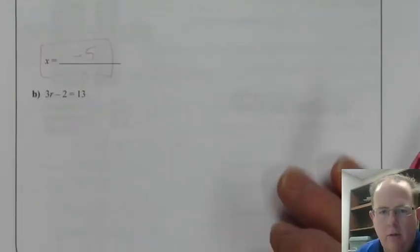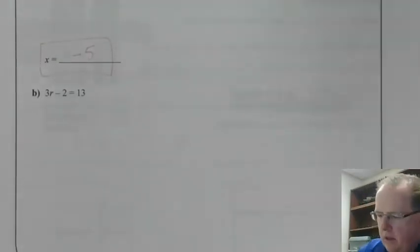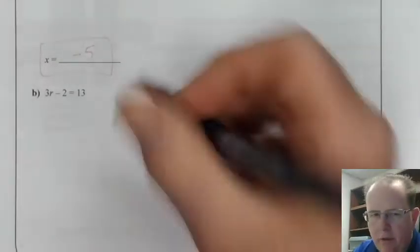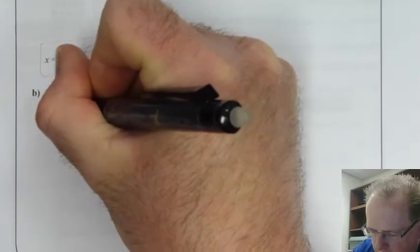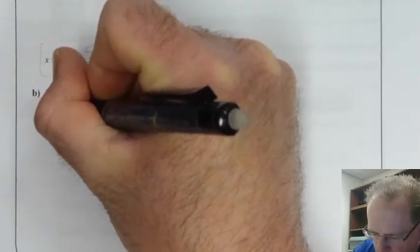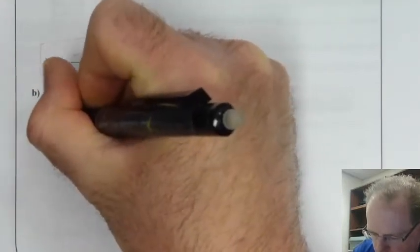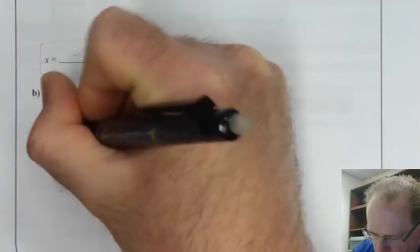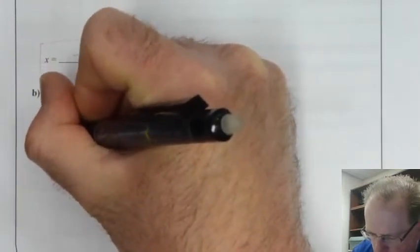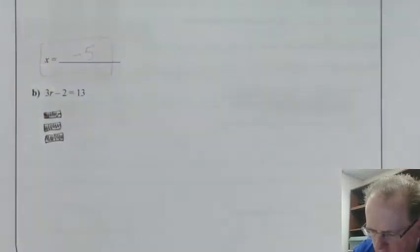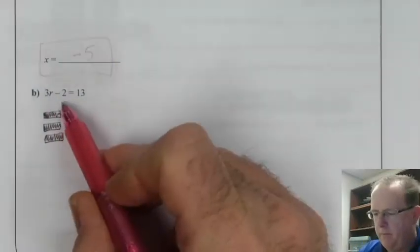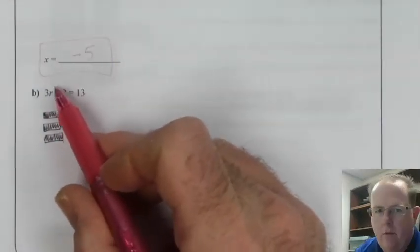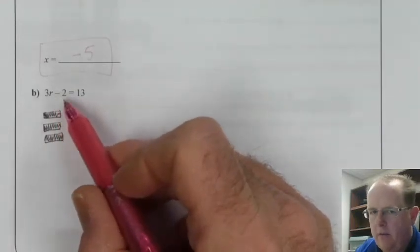3r minus 2 equals 13. 3r, so I have three variable bars. And I've got subtract 2, so that's the same as adding two negatives. If you want, you can rewrite this.